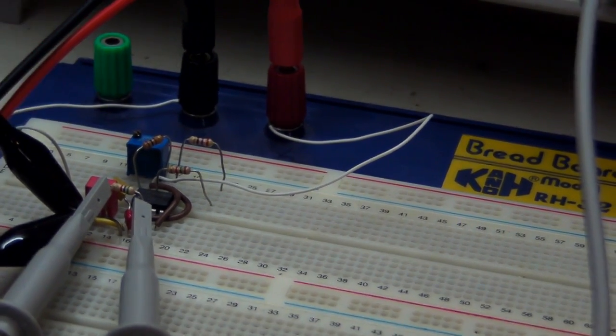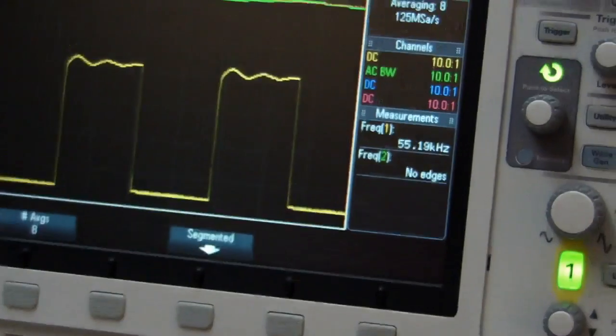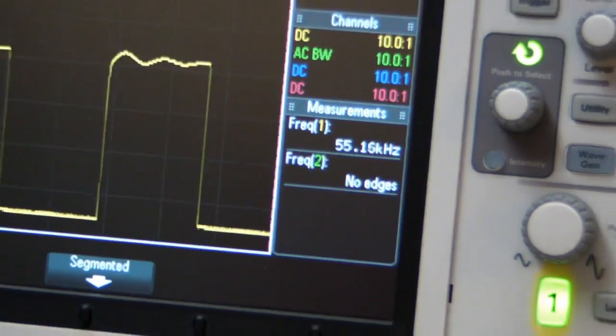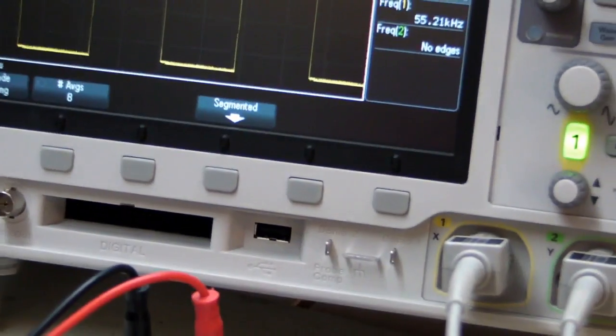Here it is, wired up exactly as per that Davecad drawing. Here's my adjustable pot up here, which I'll use to adjust the oscillator frequency. That's my low pass filter there, and I've got a bypass cap on there. But as you'll see, that won't have any impact on this.